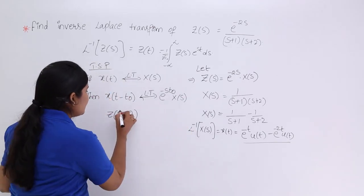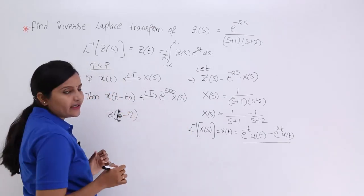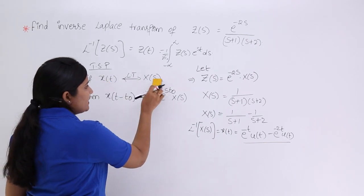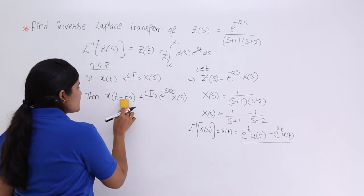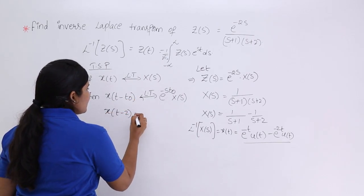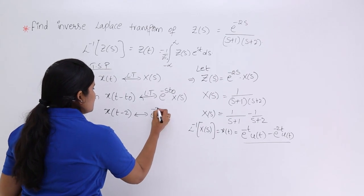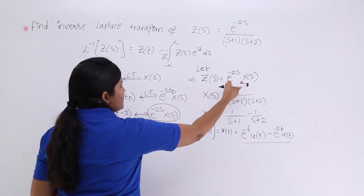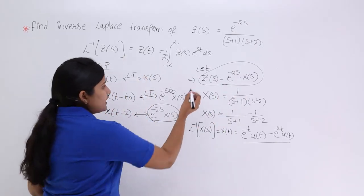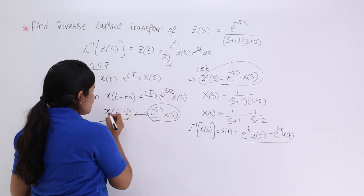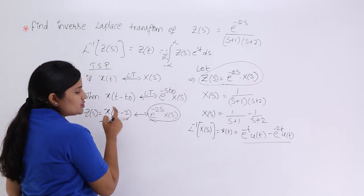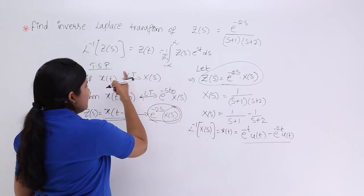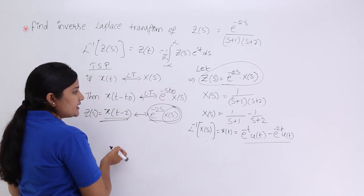For X(T) we have X(S), and for X(T-2) we get e^(-2S)·X(S) by using the time shifting property. So Z(S) = e^(-2S)·X(S) corresponds to X(T-2) in the time domain. That means Z(T) = X(T-2), where T0 = 2.